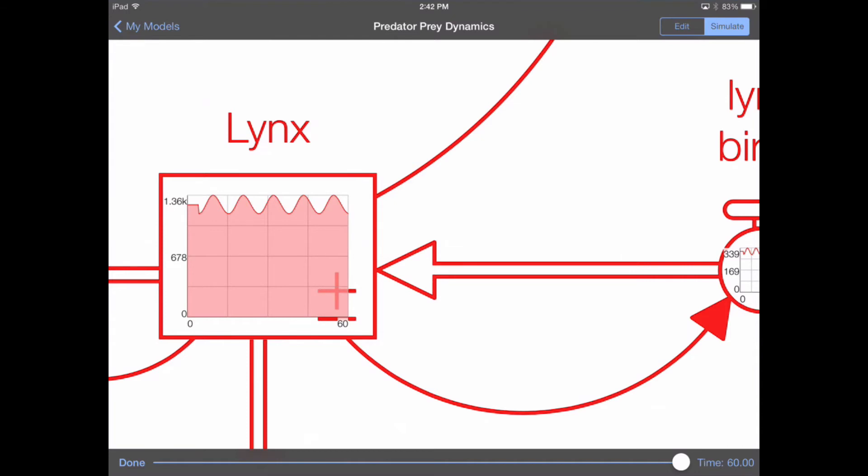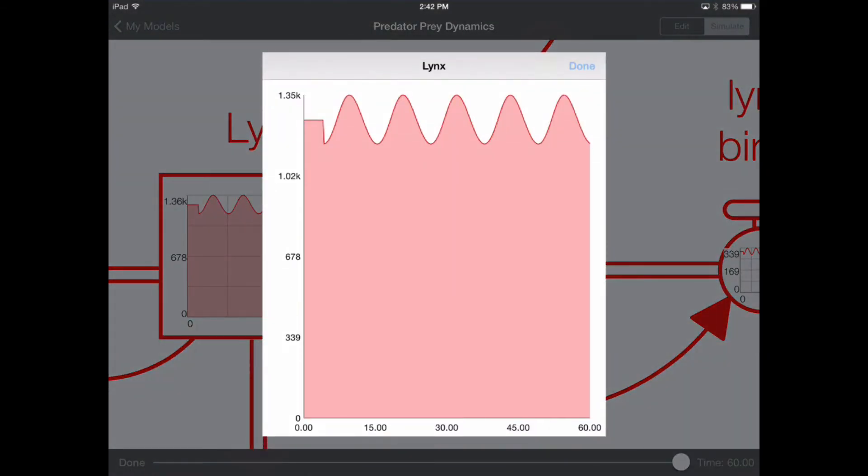If we want a larger graph, we can tap on any element on the screen and it will pop up a nice detailed graph, which we can then press and hold on to see specific results at specific points in time.